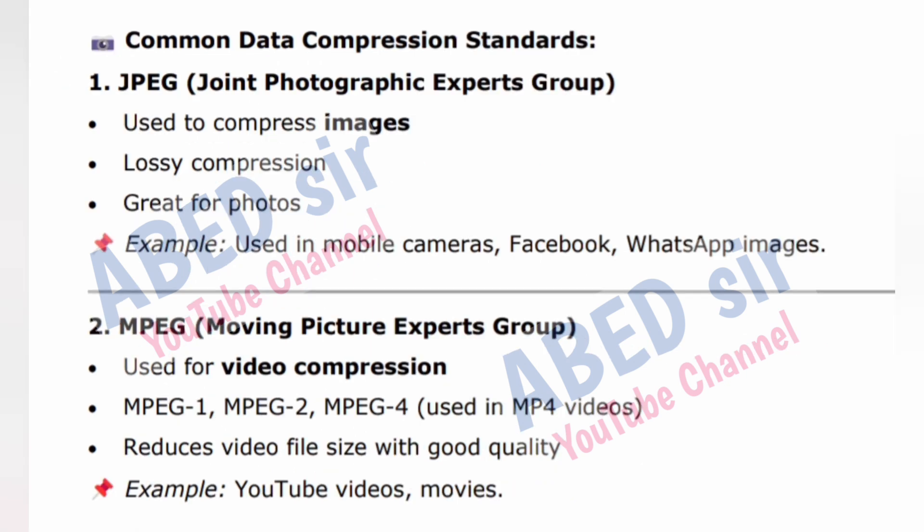Common data compression standards. 1. JPEG — Joint Photographic Experts Group: used to compress images, lossy compression, great for photos. Example: used in mobile cameras, Facebook and WhatsApp images.